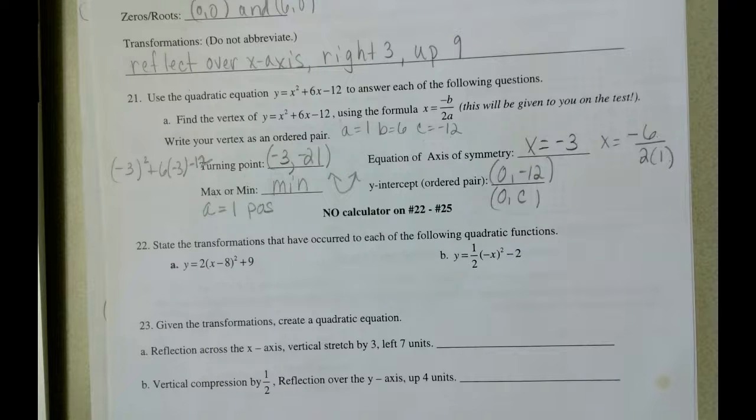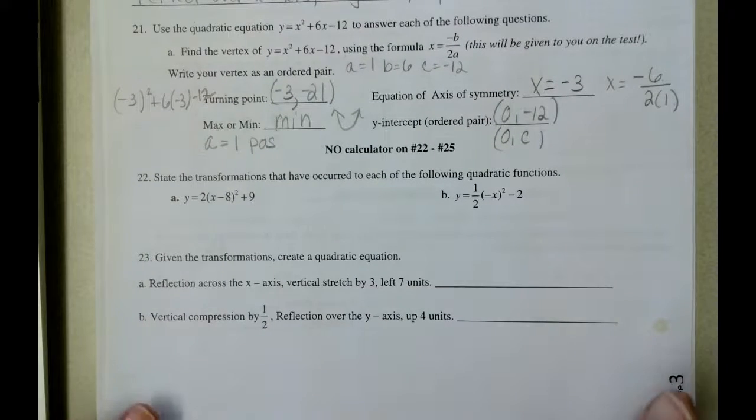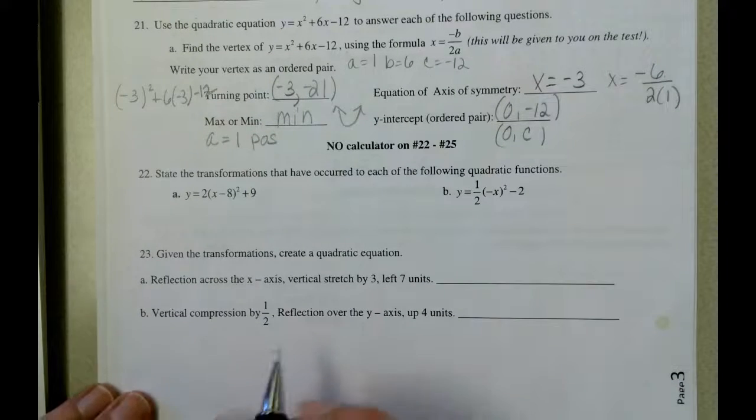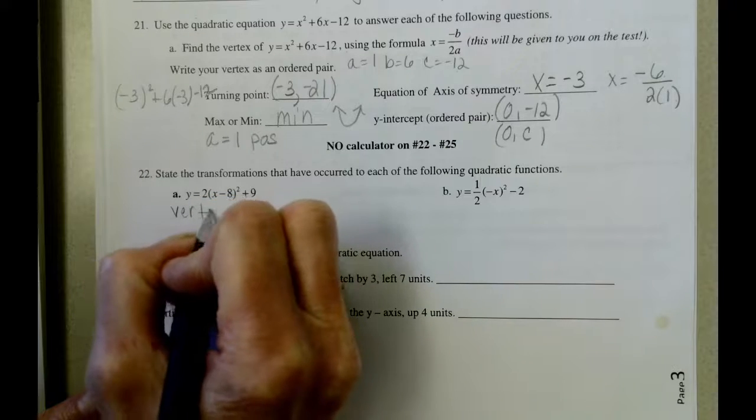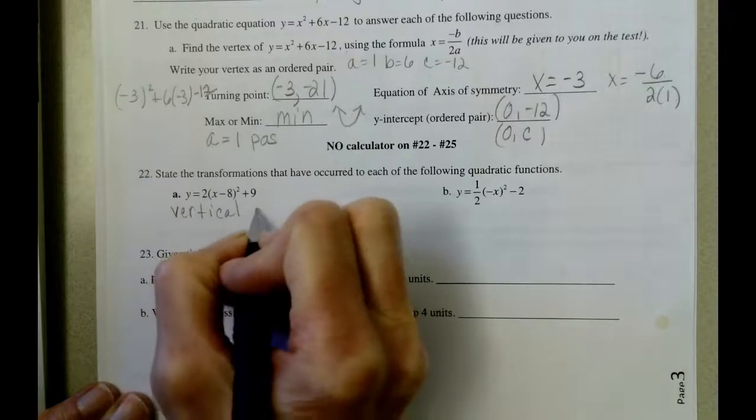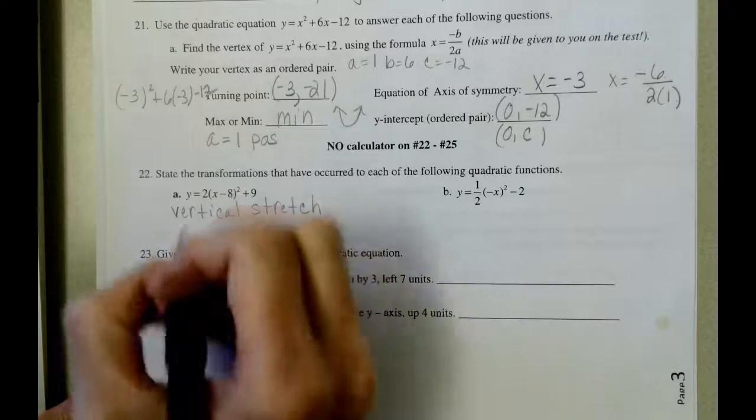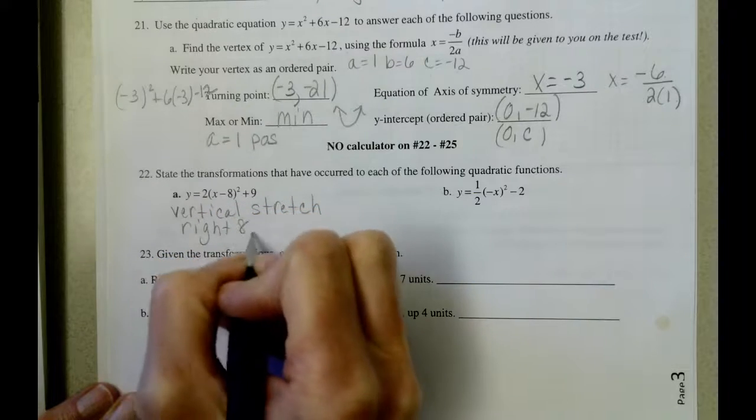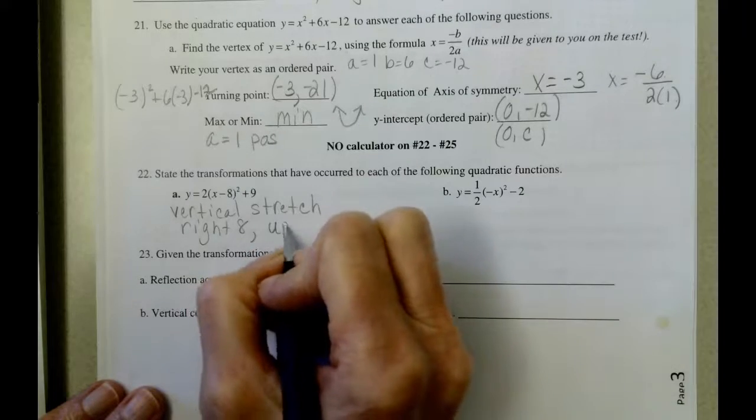If we look at problem 22, looking at the transformations that have occurred, if you took notes on that chart, I would pull out that chart, which is helpful, but the 2 causes our function to have a vertical stretch. Minus 8 means that we're going to move our graph right 8, and plus 9 means that we're going to move our graph up 9.